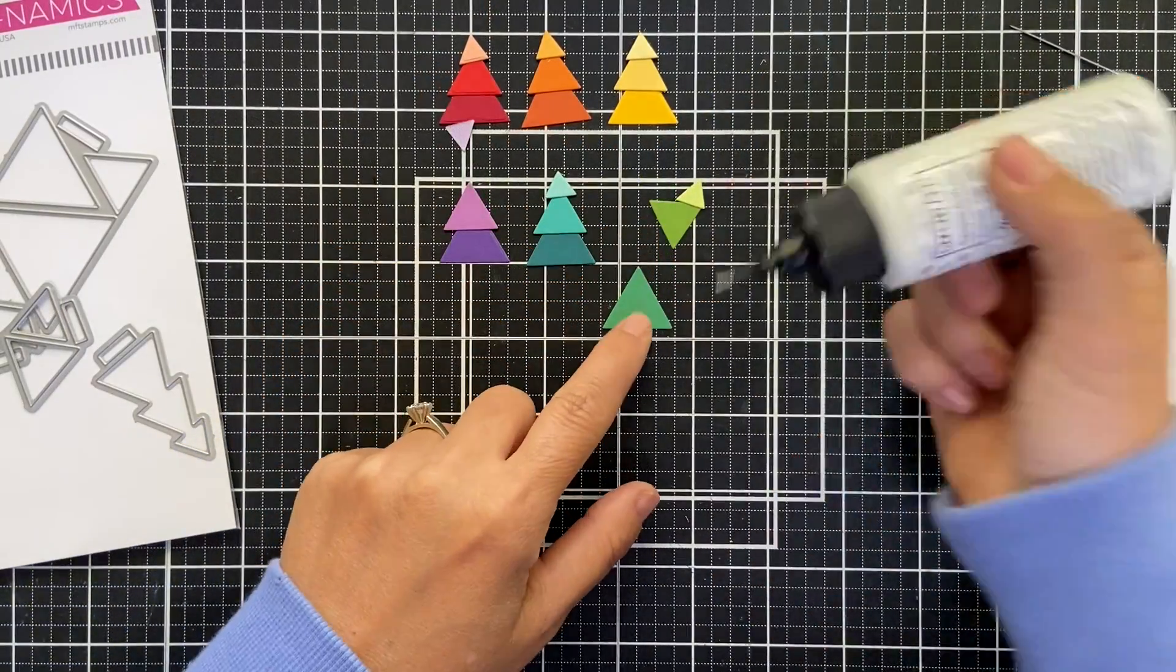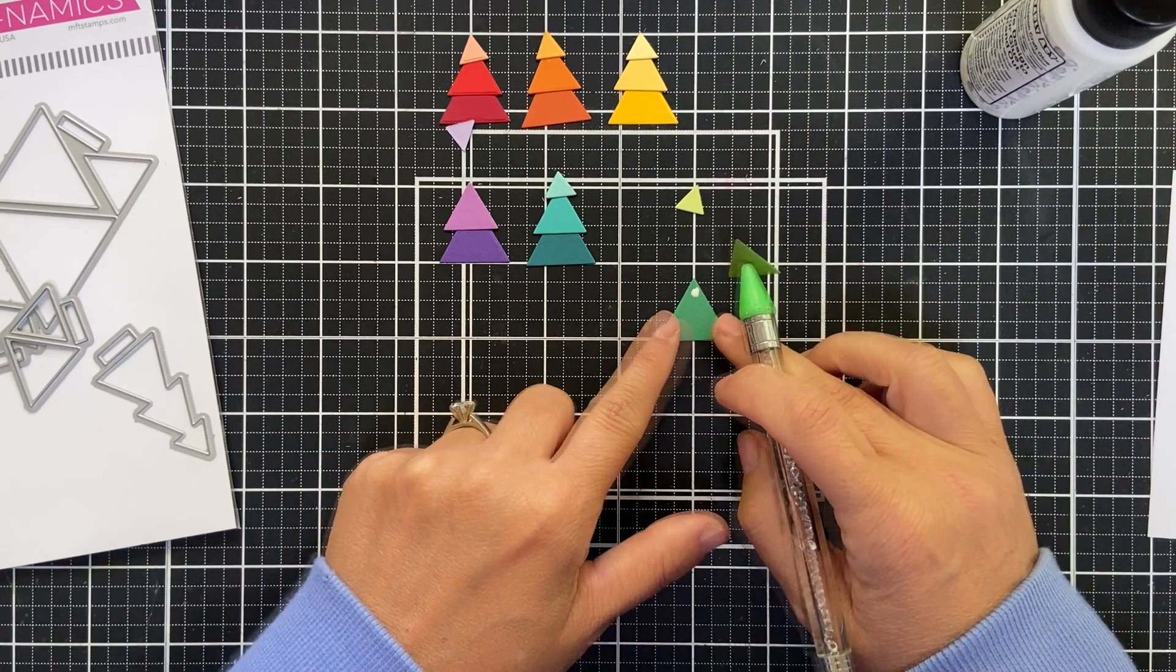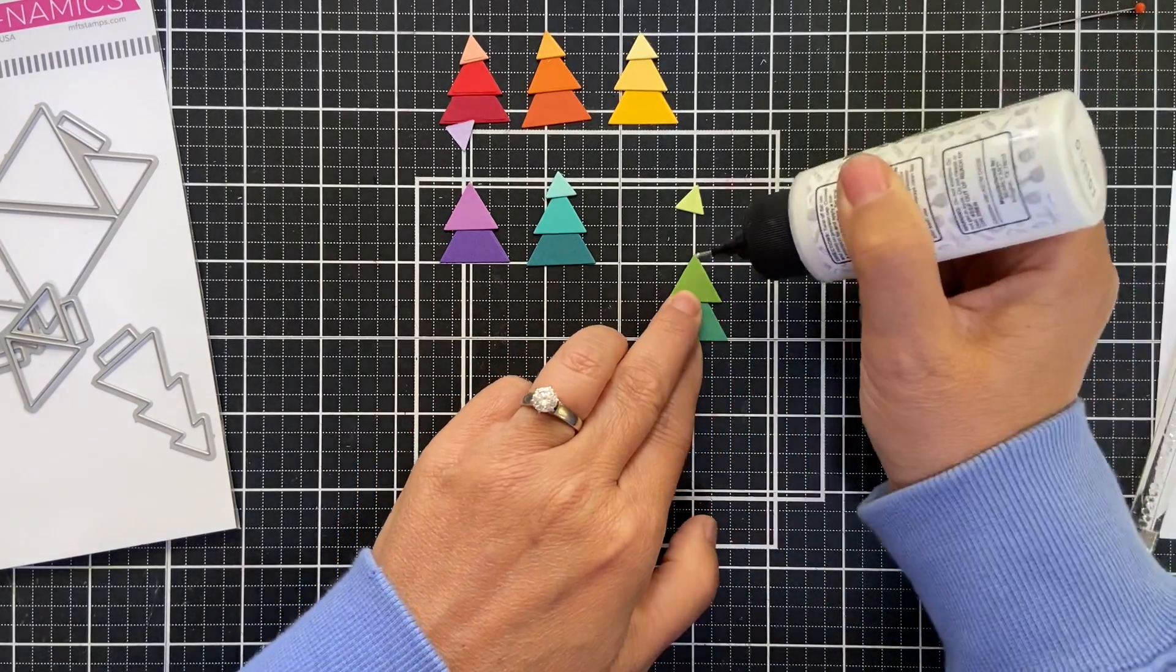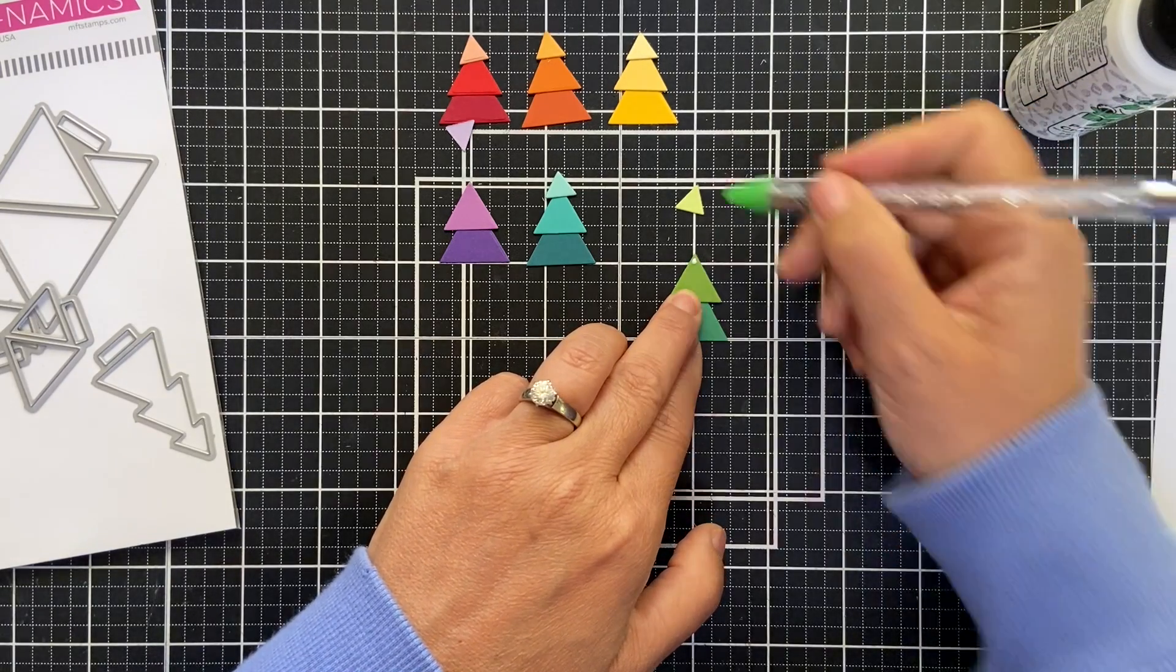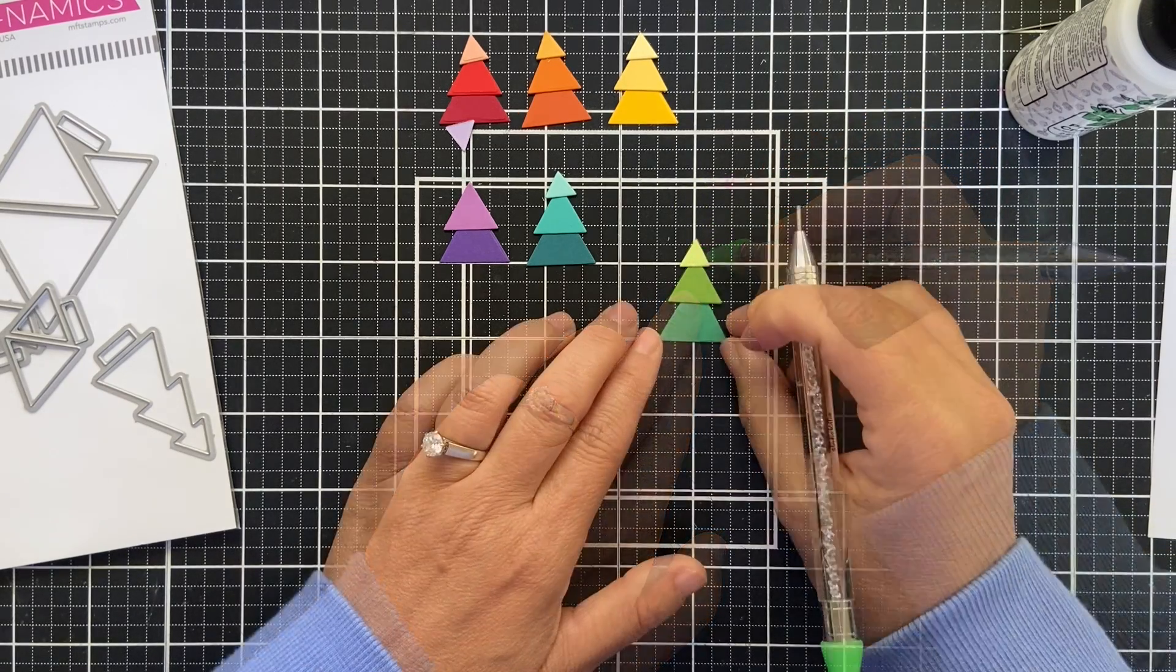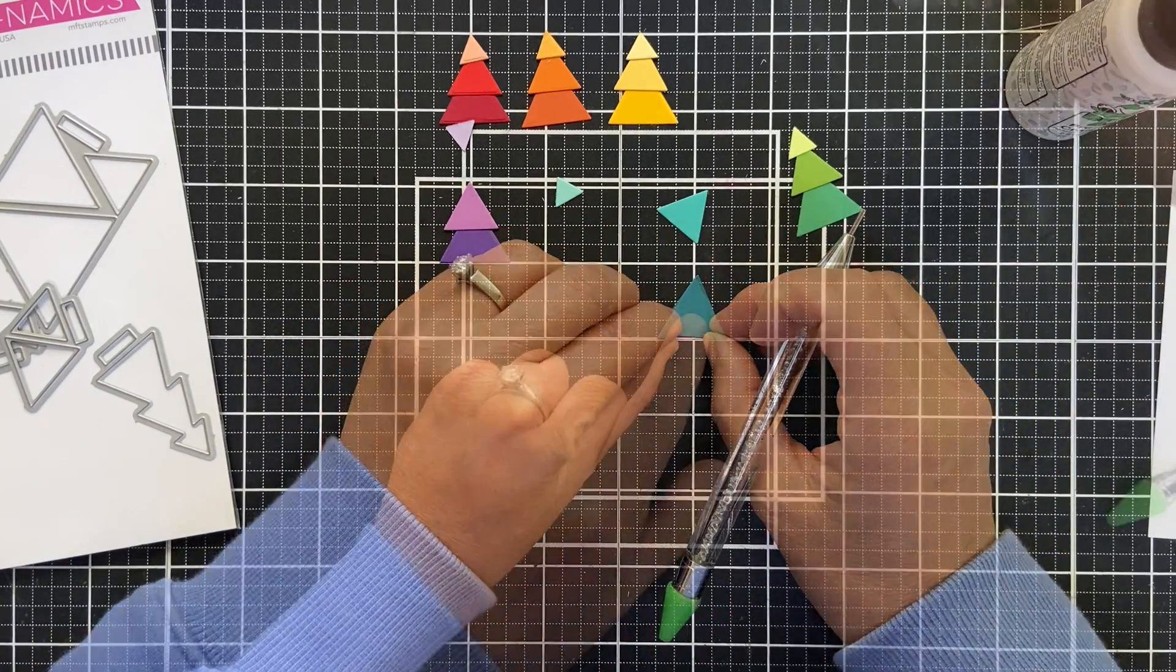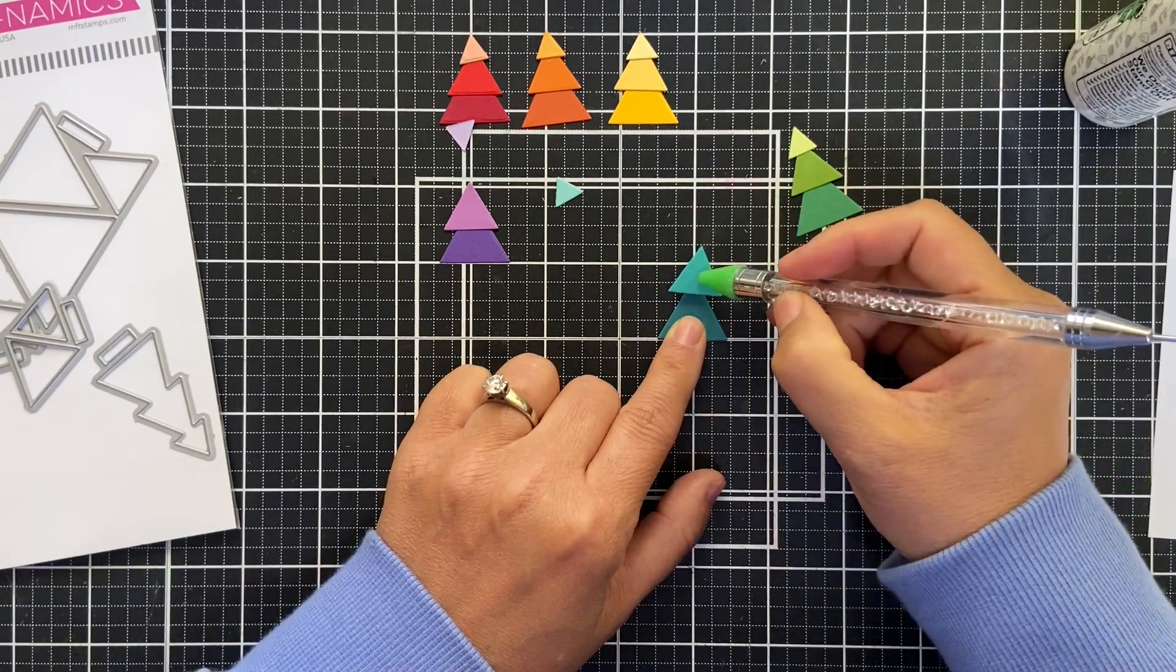I'm gonna start adhering these. I'm just gonna use some Barely Art liquid glue - you just need a little dot up in the corner. Now here's the trick: I used my grid mat to kind of center the triangle so I knew that the point would always be on that line, and that helped me keep my triangles straight. If you wanted to make these dimensional you could use little slivers of foam tape and pop up each triangle.